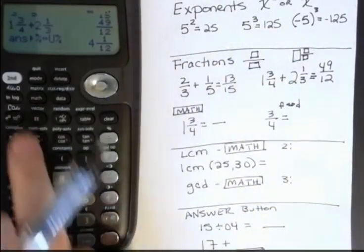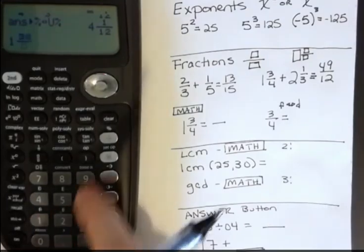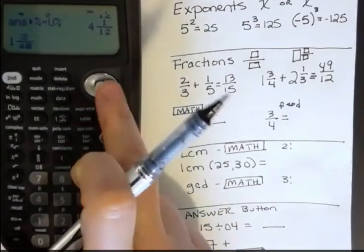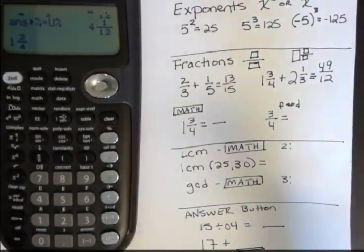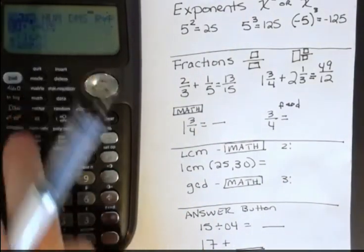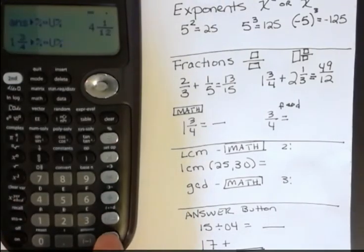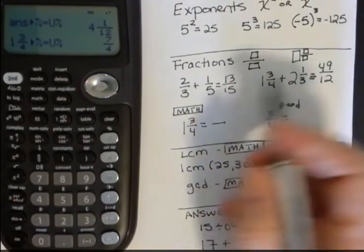Let's say I have one and three fourths. So I have one, three, fourths. But I want to know what is that as an improper fraction. So I'm going to hit math. And then the very first choice is that changing. So I'm going to hit enter, enter again, and I get seven fourths.